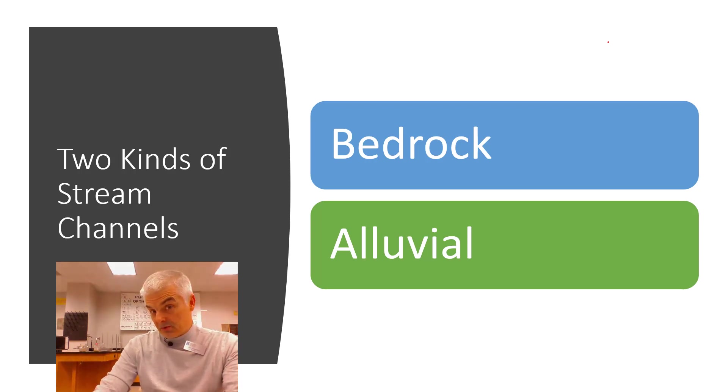And there are two kinds of stream channels. There's the bedrock channel or an alluvial. Now, as a note, alluvial is going to have two subparts. We'll get to that in a little bit later.